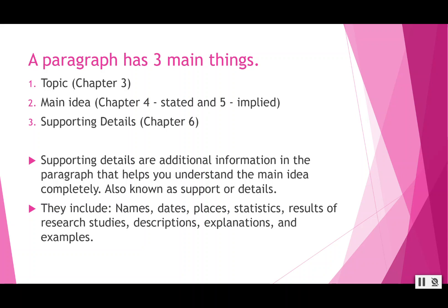The second thing a paragraph needs is the main idea. We had stated and implied main ideas. Chapter 4 covered the stated main idea — it had your topic plus the most important point the author wanted to make about that topic, written as one sentence that could be at the beginning, end, or middle of the paragraph. Chapter 5 covered the implied main idea, which the author did not write — you had to formulate it yourself based on what was in the paragraph.